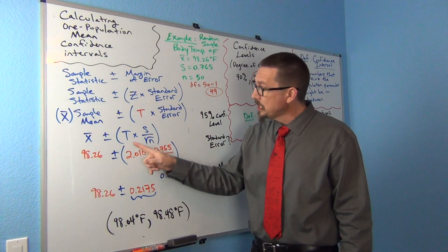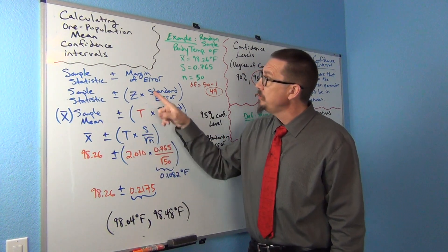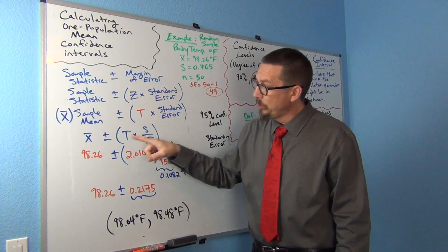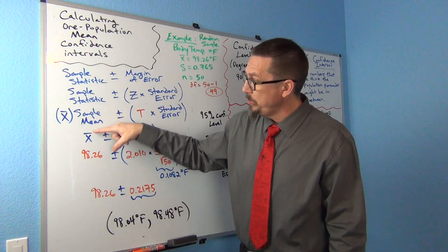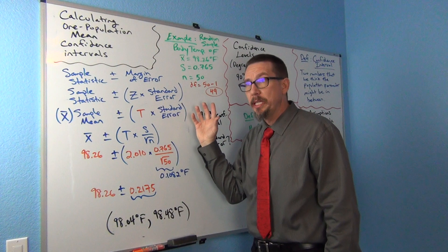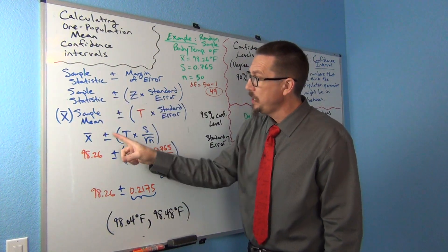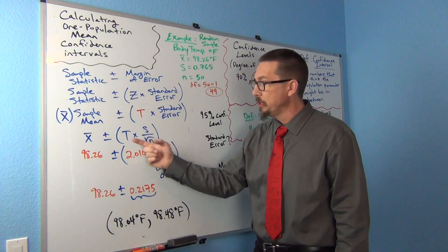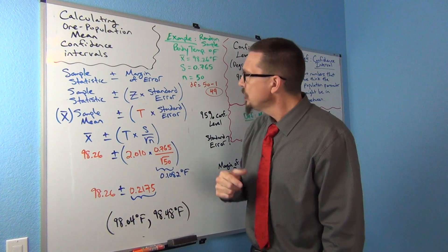So t times the standard error is going to give me the margin of error. And then I'm going to start with my sample mean. Since I'm trying to estimate a population mean, you start with the sample mean and then you add and subtract the margin of error. Let's look at an example.